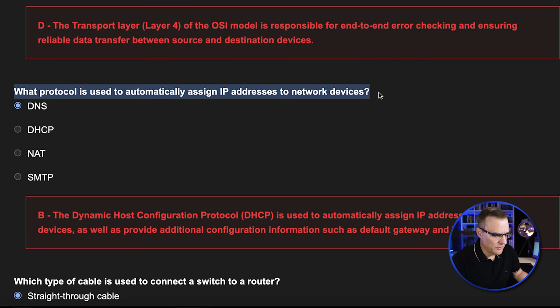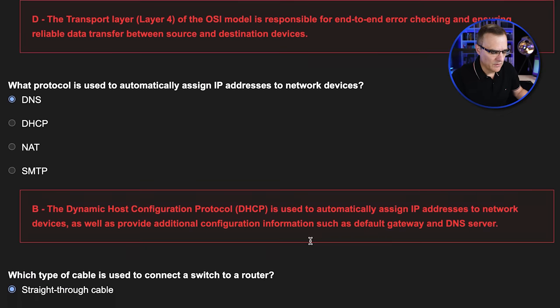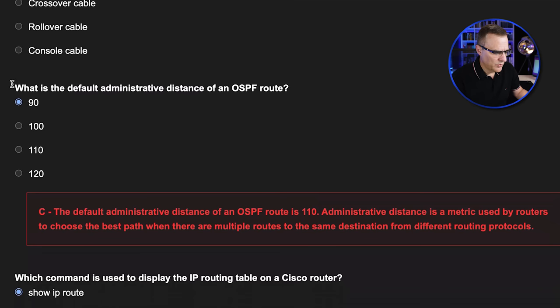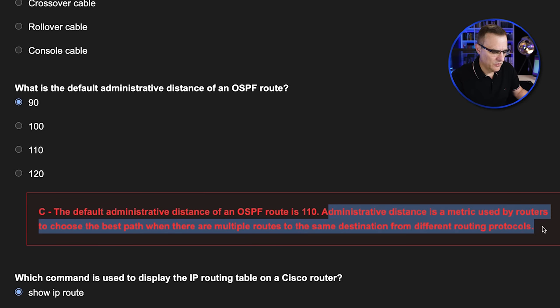Let's check how good the questions are. For example: what protocol is used to automatically assign IP addresses to network devices? We're told that DNS is the incorrect answer. The correct answer is Dynamic Host Configuration Protocol, or DHCP. Here's one related to hallucinations — what is the administrative distance of an OSPF route? We're told that the answer is 110, not 90. Administrative distance is a metric used by routers to choose the best path when there are multiple routes to a destination using different routing protocols.